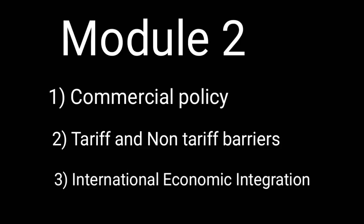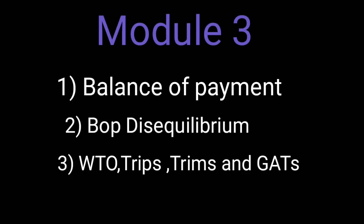Module 3 is fairly easy but requires some conceptual understanding. First, Balance of Payment — study it in detail: capital account, current account, and the full structure. Then study BOP disequilibrium — its causes and the measures to correct it, including what different policy measures can be taken. Third, recent developments in TRIPS (Trade Related Intellectual Property Rights), TRIMS (Trade Related Investment Measures), GATT, and the WTO — study these in detail as questions are expected on them.